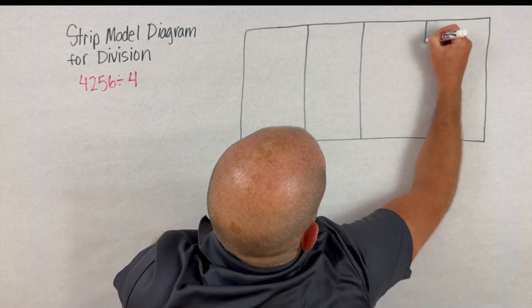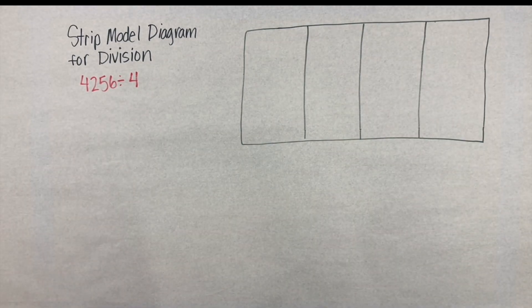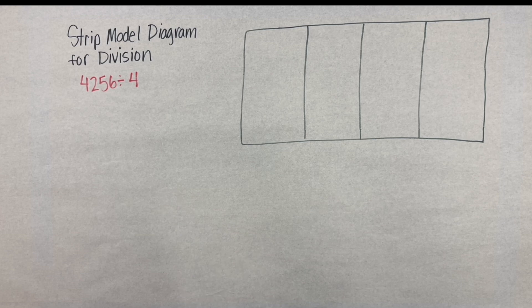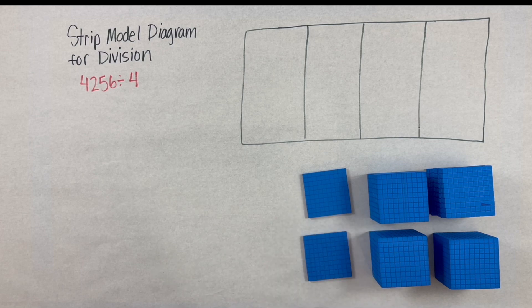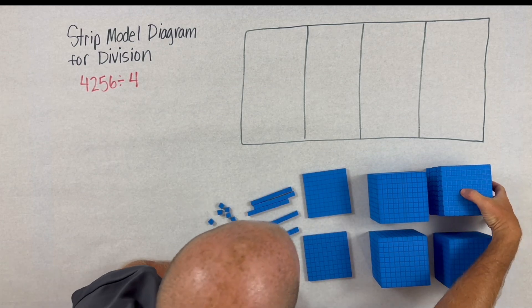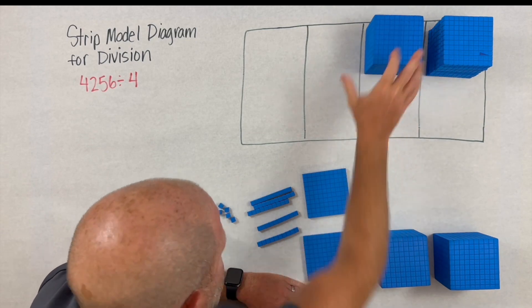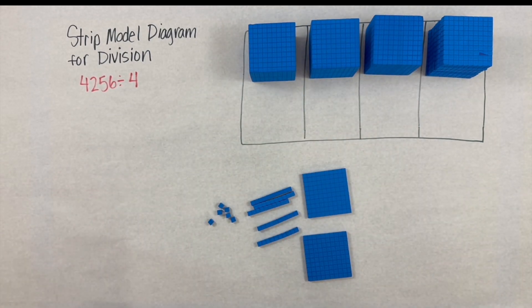Here for this case we'll take 4256, and using a linear model or a strip model diagram, we're going to share these base 10 blocks. Starting with the base 10 blocks says that we're beginning conceptually, so here we'll take our thousands and begin to partition those, share them evenly within each section.